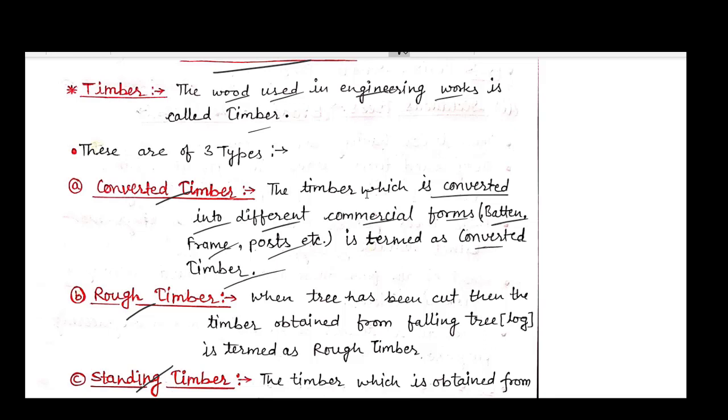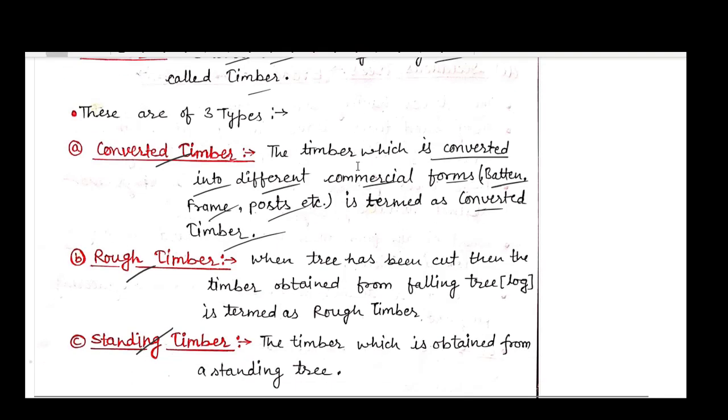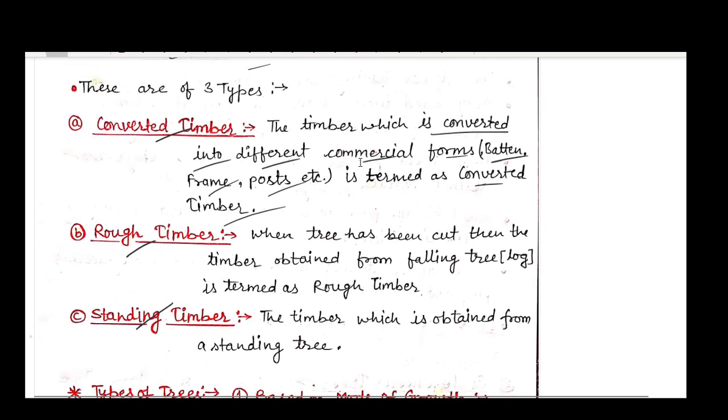These are termed as converted timber, meaning it is converted into a definite shape for use in engineering works. Second is rough timber, which is obtained when a tree has been cut. The timber obtained from a falling tree, also known as a log of wood, is known as rough timber.